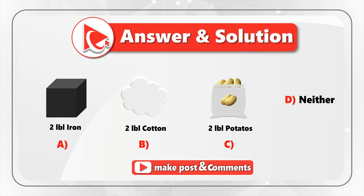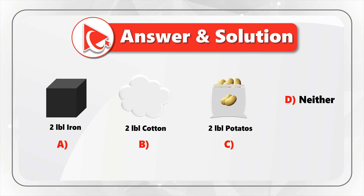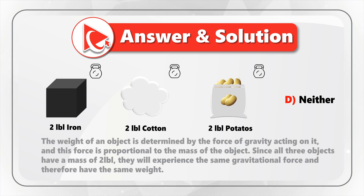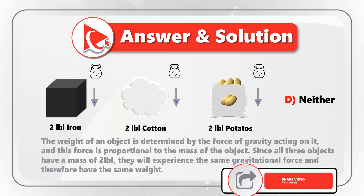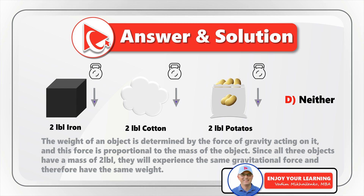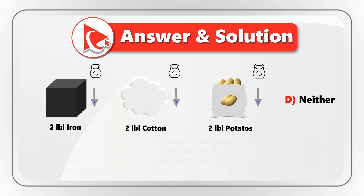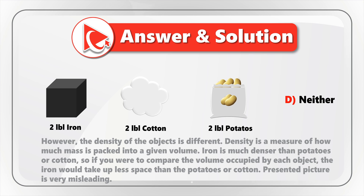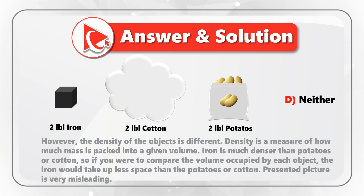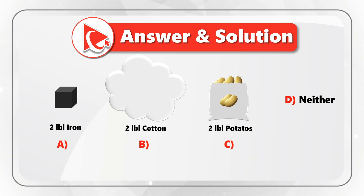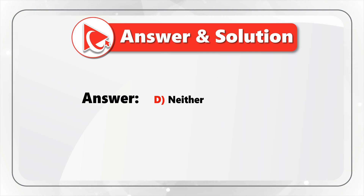As you might have figured out, all three objects — 2 lb of iron, 2 lb of potatoes, and 2 lb of cotton — will have the same weight. The weight of an object is determined by the force of gravity acting on it, and this force is proportional to the mass of the object. Since all three objects have a mass of 2 lb, they will experience the same gravitational force and therefore have the same weight. The confusion here is that the density of these objects is different — iron is much denser than potatoes or cotton, so iron takes up less space. The presented images are very misleading. So the correct answer is choice D, neither object, since none is the heaviest.